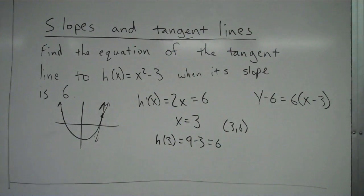So there you have it. That is the equation of the tangent line to this graph when its slope is equal to 6.